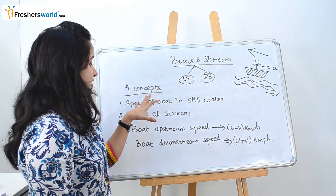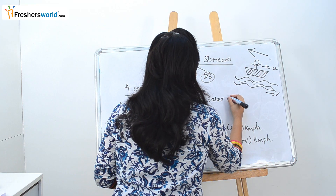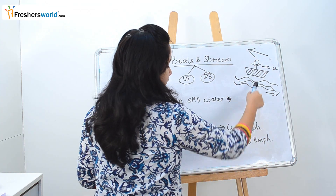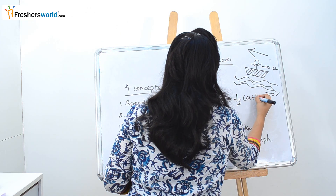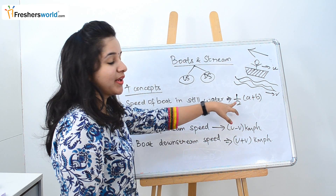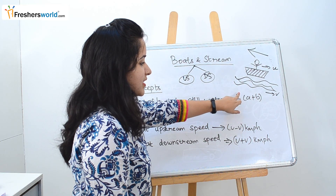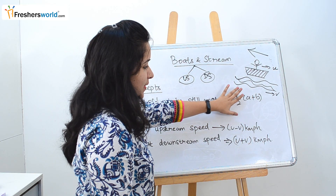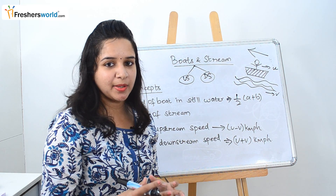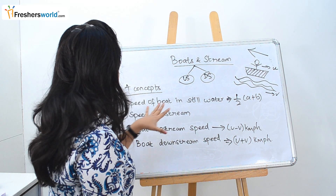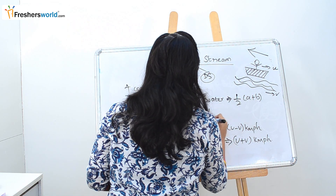Next, speed of the boat in still water is nothing but half of (A plus B), where A is downstream speed and B is upstream speed. When you add downstream and upstream speeds you get a value of 2U, so taking half gives you U. Speed of the stream is nothing but half of (A minus B). Just remember these formulas.